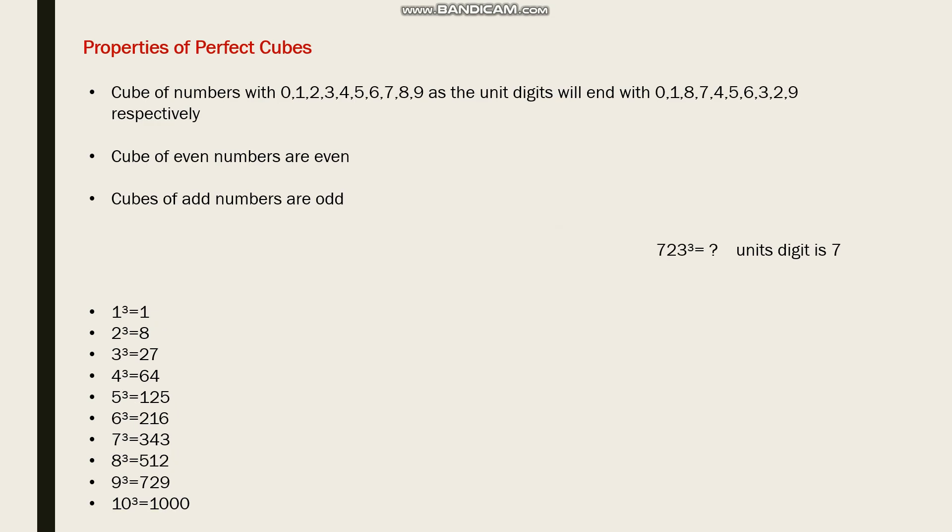Properties of perfect cubes: The cube numbers with 0, 1, 2, 3, 4, 5, 6, 7, 8, and 9 as the unit digits will end with 0, 1, 8, 7, 4, 5, 6, 3, 2, 9 respectively. So you can take any number - if it ends with these numbers, the cubes will end with 0, 1, 8, 7, 4, 5, 6, 3, 2, and 9 respectively.